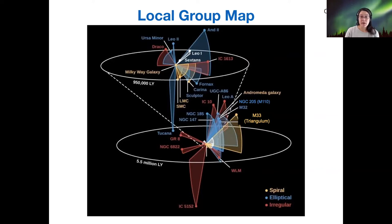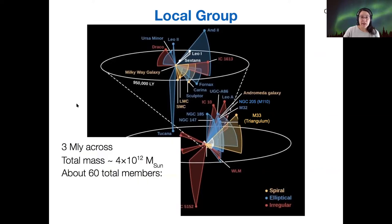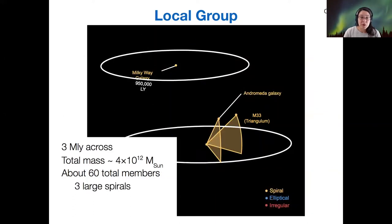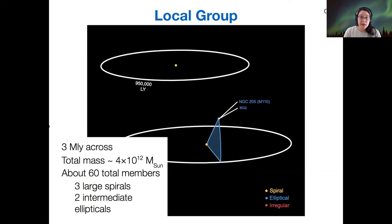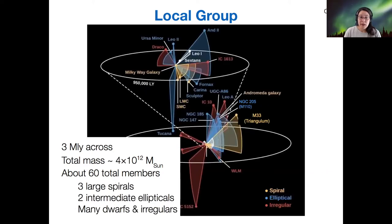The entire local group is about three million light years across, its total mass is four trillion times the mass of the sun, and it has 60 total members. The three large spirals are Milky Way, Andromeda, and M33 Triangulum. There are two intermediate mass elliptical galaxies.